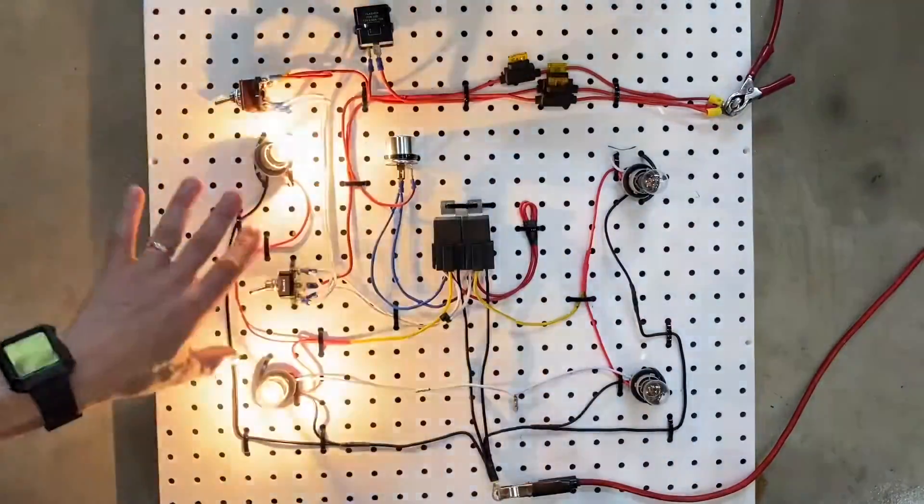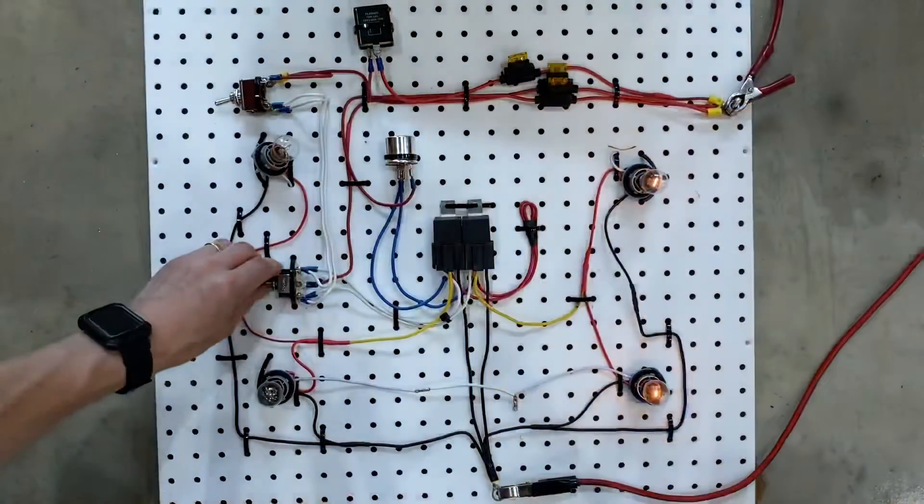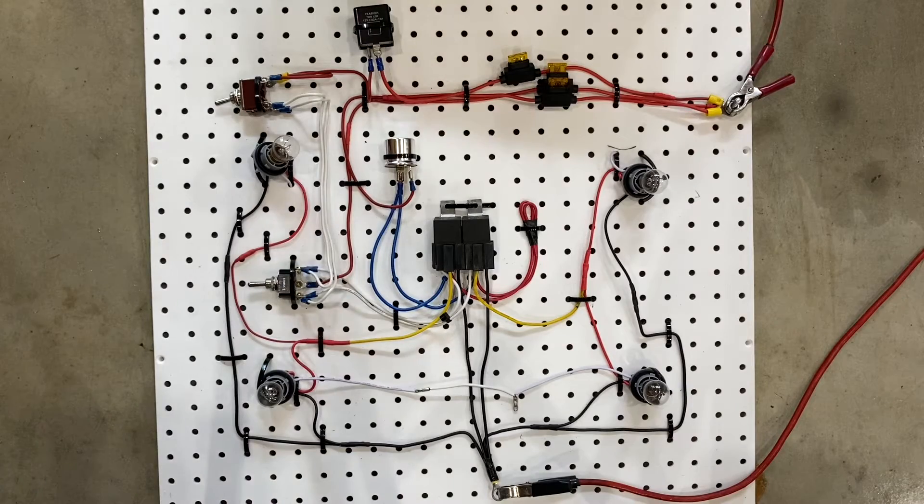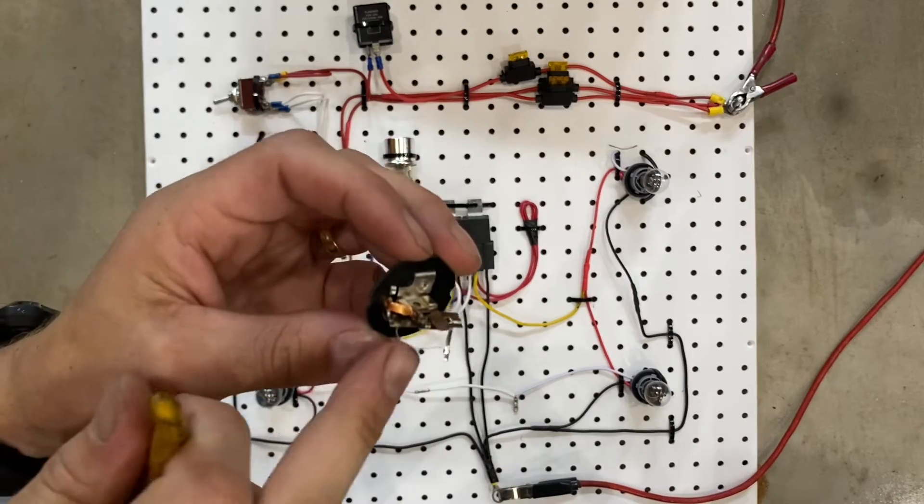Here we have a turn signal circuit with left and right directionals. The way they blink is with a flasher relay, and inside the flasher relay there's a little metal tab on each side.